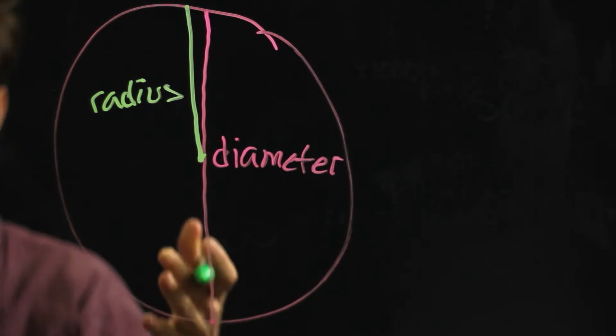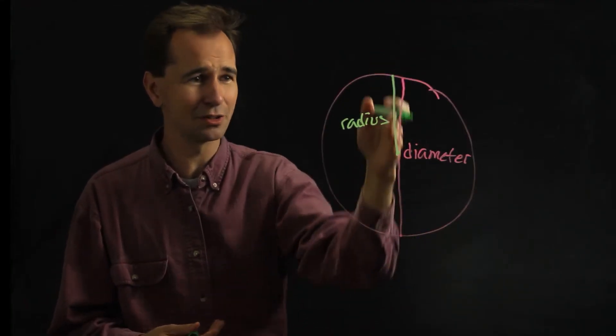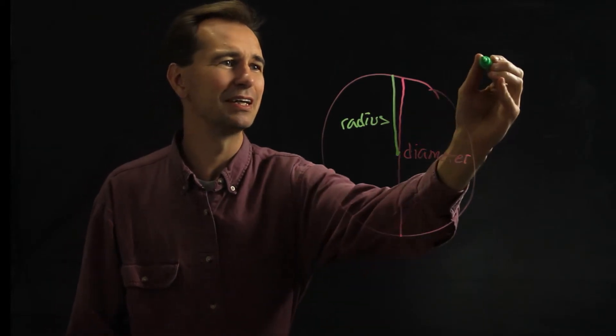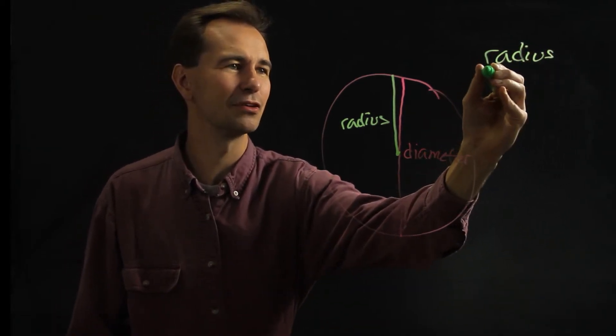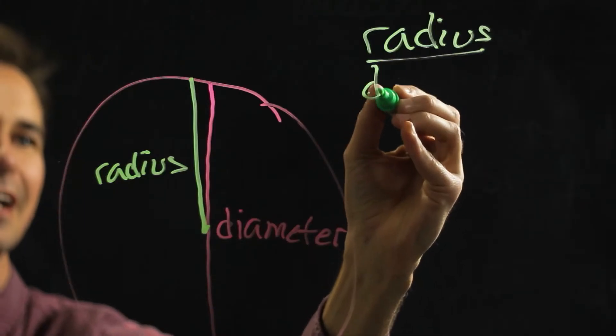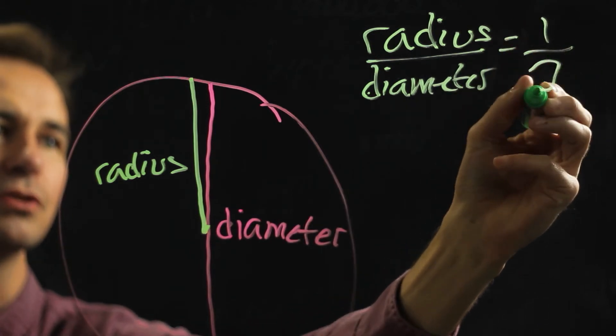If you notice the way this works, since the diameter is all the way through and the radius is just halfway through, if you find the ratio between the radius and the diameter, it's always just one over two.